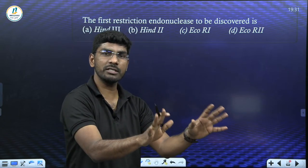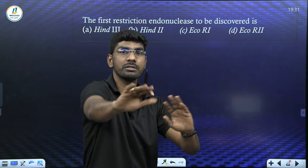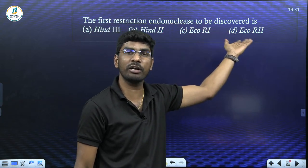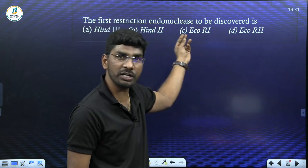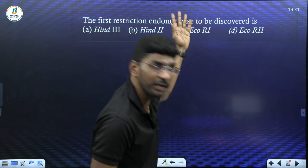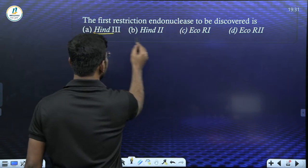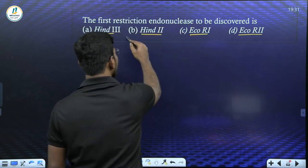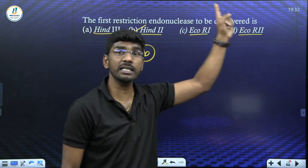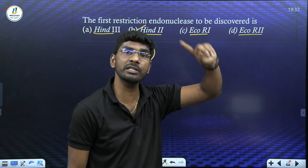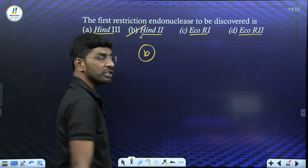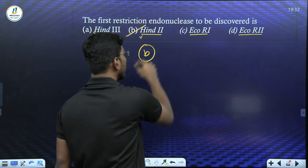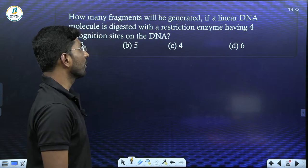Question: What was the first restriction endonuclease discovered? The naming convention: one capital letter (genus) + two lowercase letters (species) + strain number. The first restriction endonuclease was HindII, isolated from Haemophilus influenzae — H for Haemophilus (genus), 'in' for influenzae (species), 'd' for strain, and II for discovery number. The correct answer is Option B.